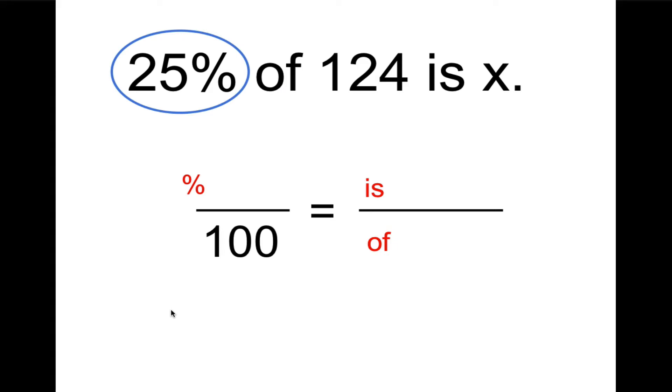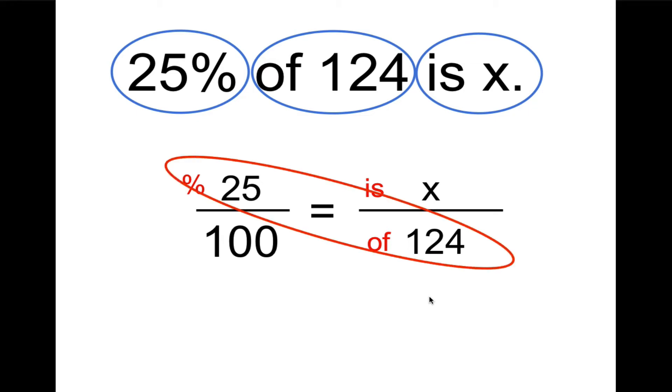So I'm going to circle 25% of 124 is x. Now each circle, there's three circles and they go into the three open spots in my proportion. I'm going to put the 25 where? That's right, as the percent. The of is going to be 124 and the is is x. Now to solve for x, we learned to solve proportions by cross-multiplying. So we would multiply 25 times 124 and then divide by the other number, which in this case is 100. So 25 times 124 equals 3,100. Dividing by 100 moves the decimal two places to the left. So we get x equals 31.